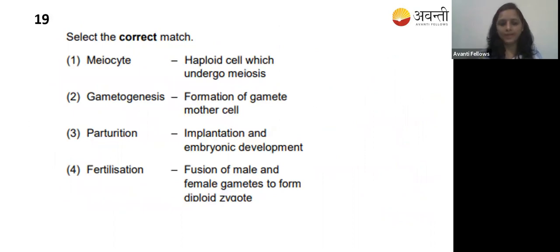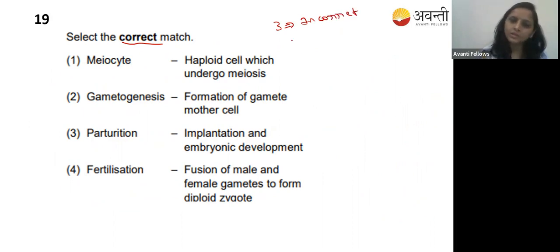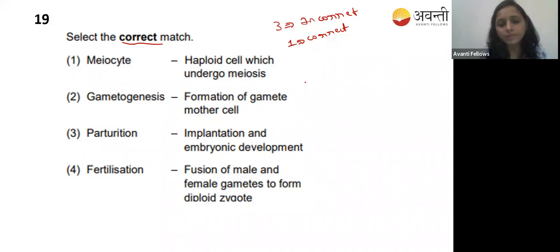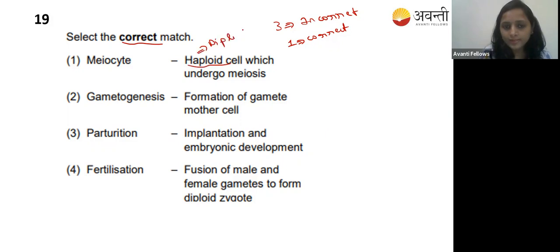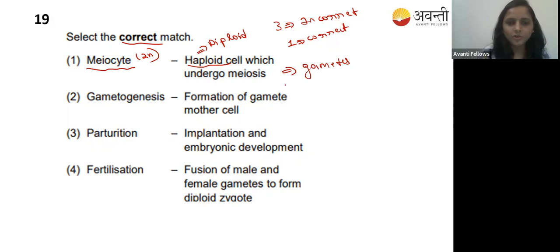Nineteenth question: select the correct match. Option one - meiocyte is a haploid cell that undergoes meiosis. No - meiocyte is a diploid cell that undergoes meiosis and gives gametes. Meiosis occurs in diploid cells, not haploid. So that is incorrect.